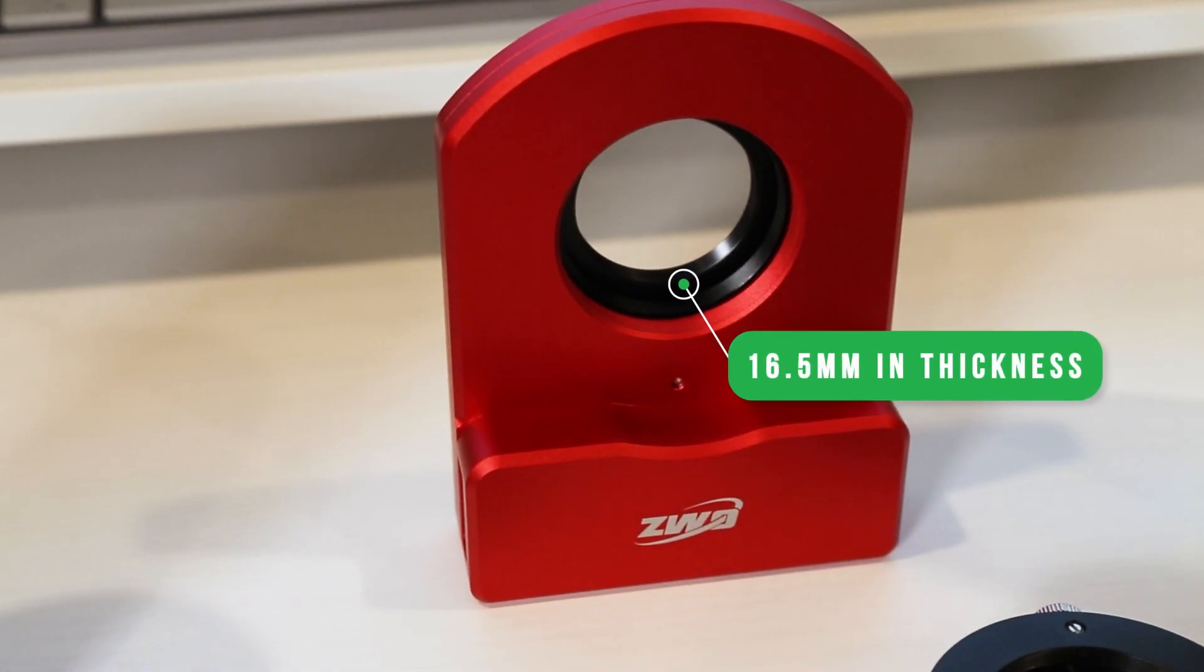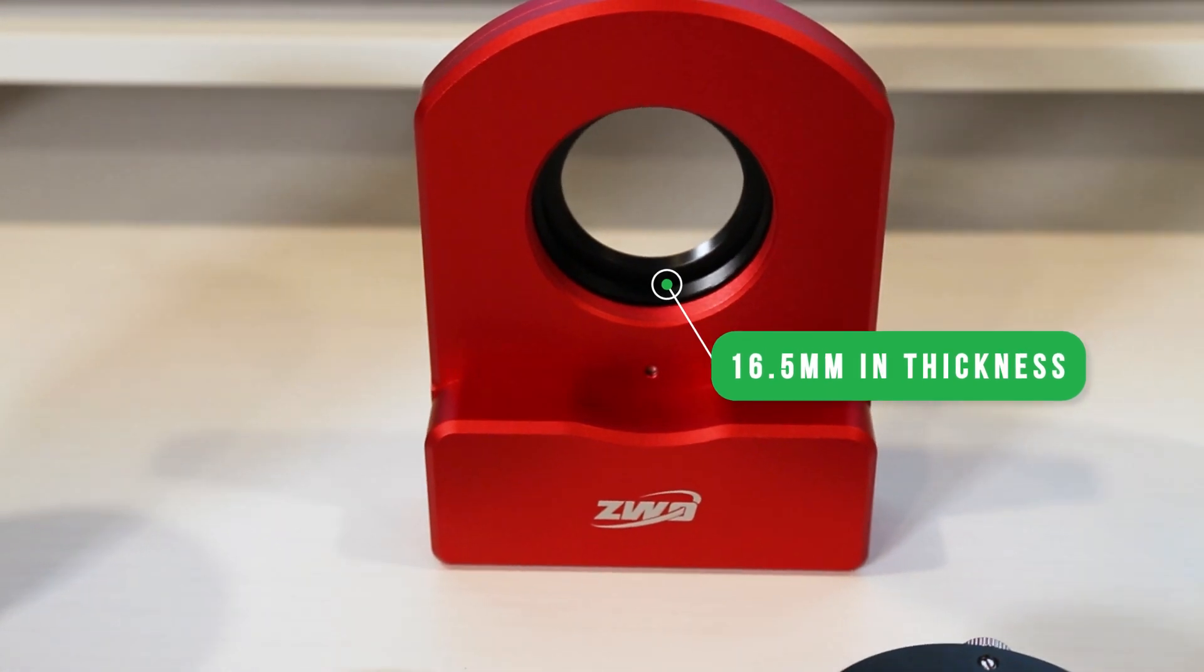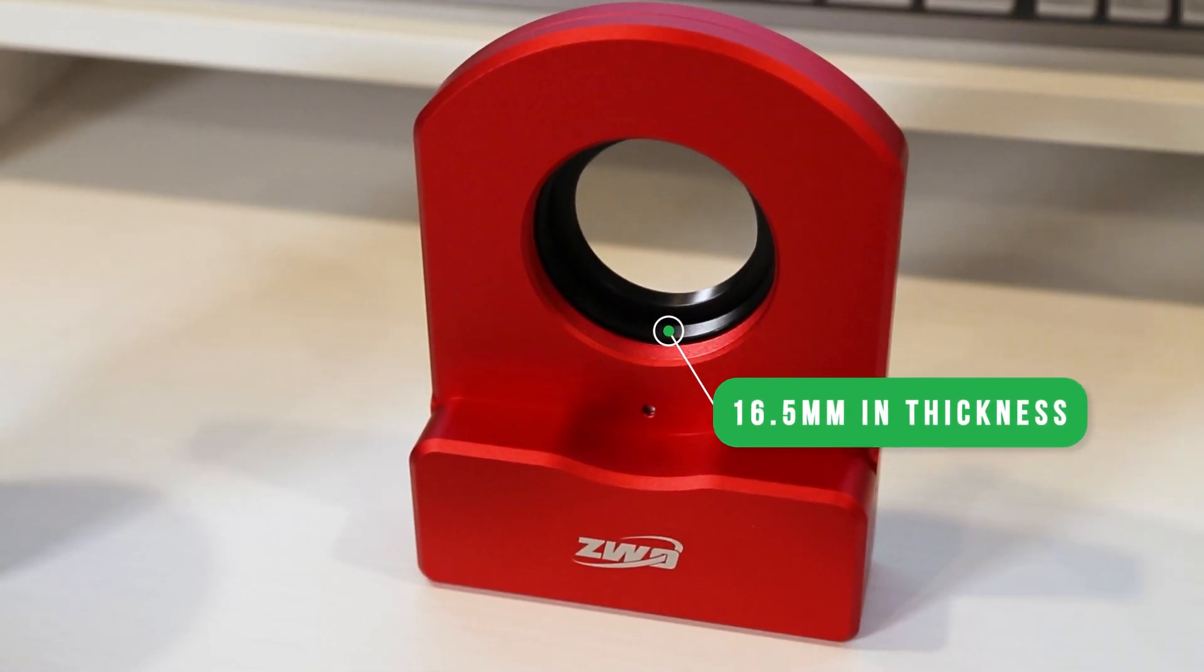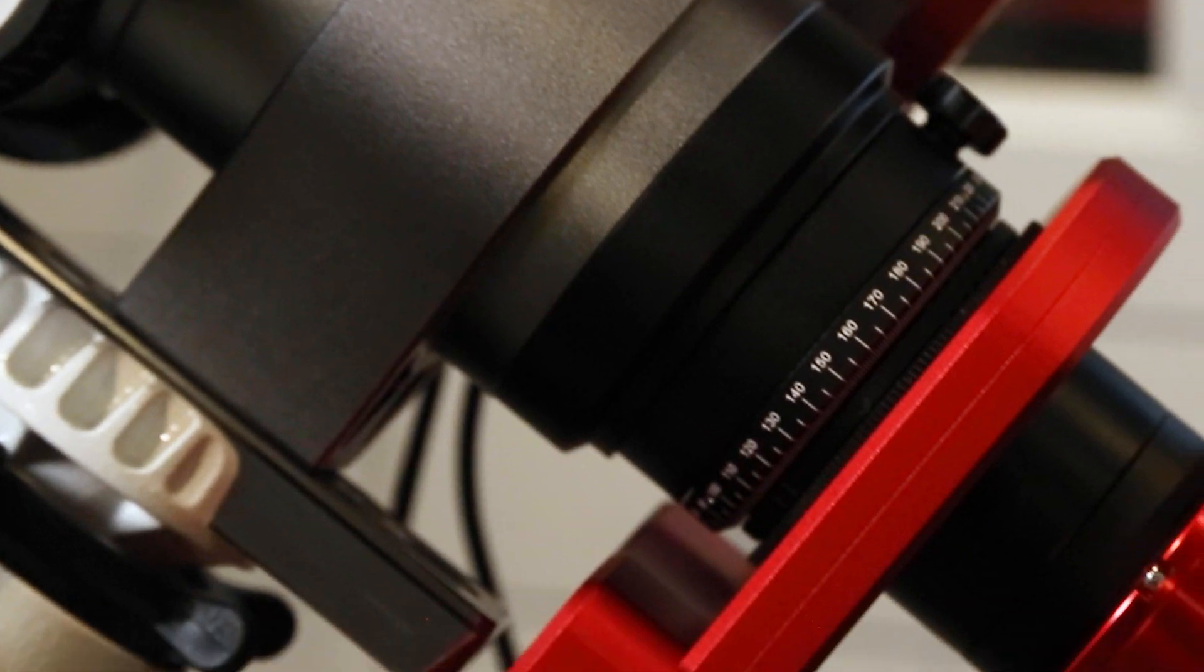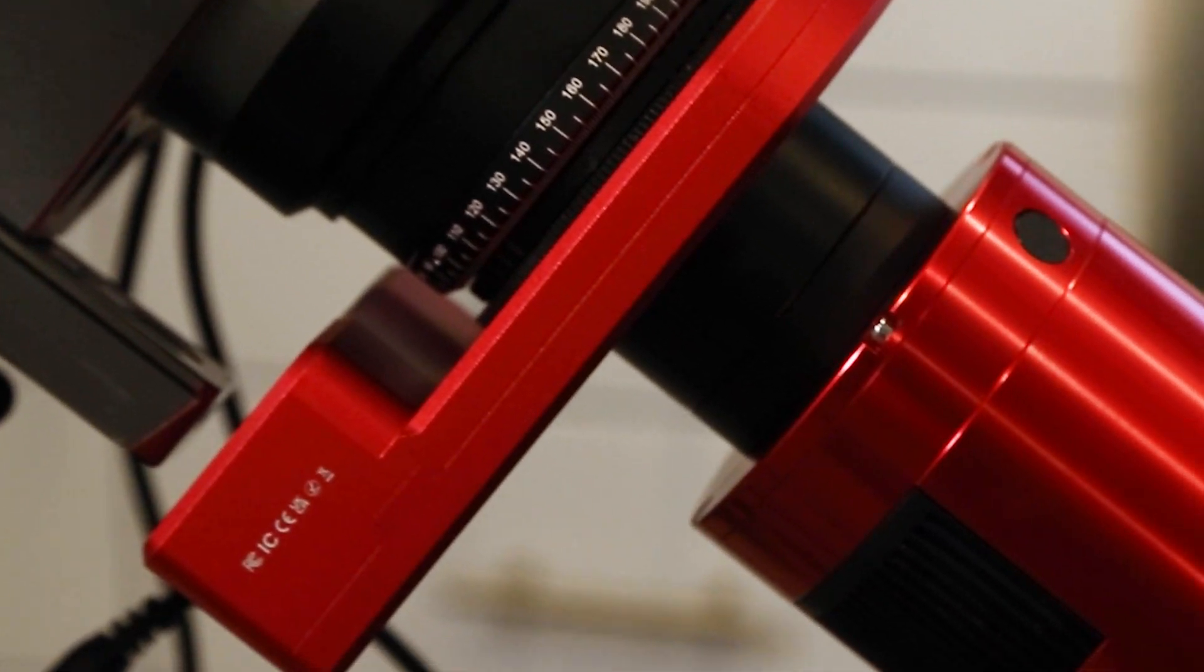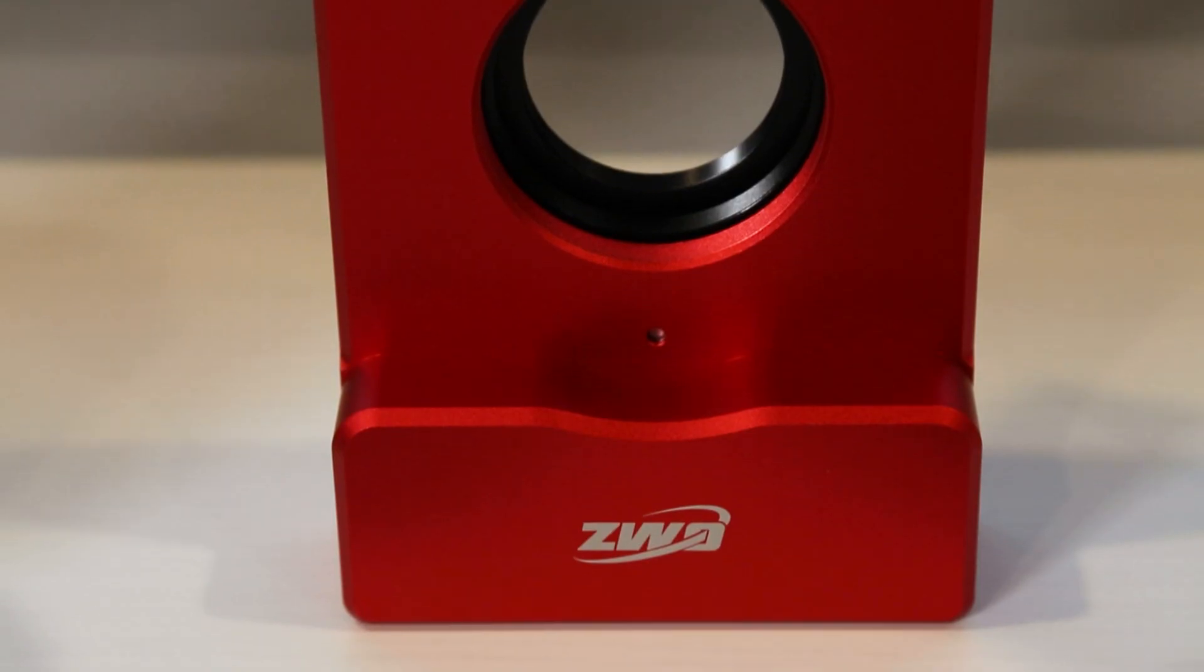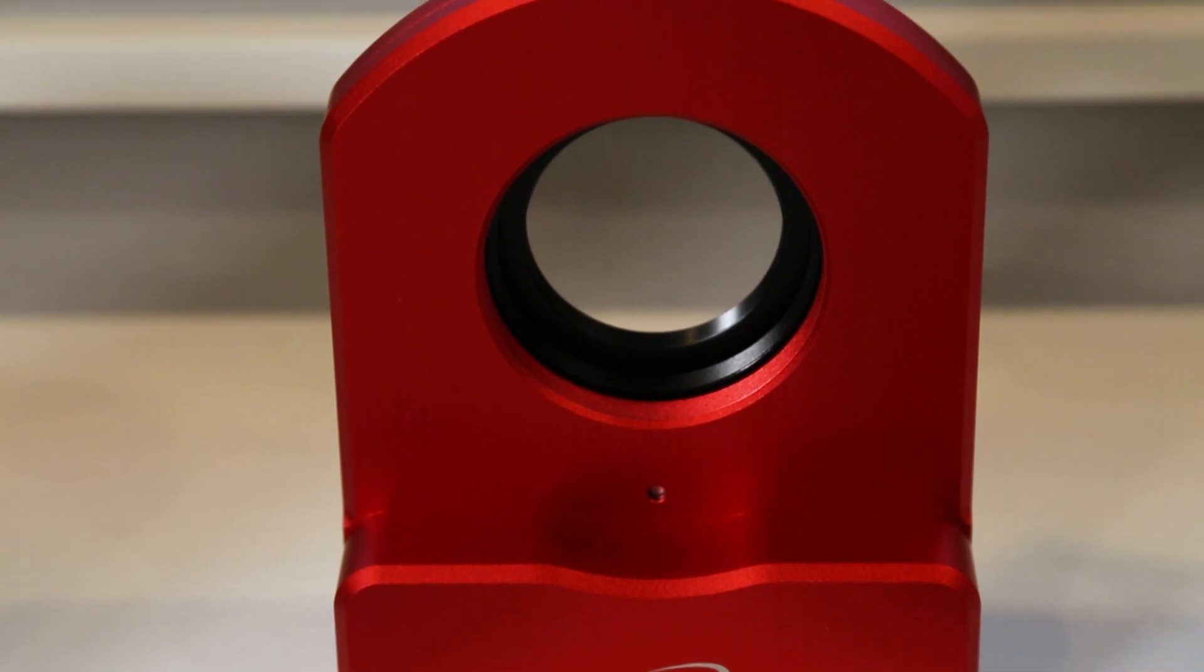It's designed at just 16.5 millimeters in thickness, which perfectly replaces the 16.5 millimeter spacer that ZWO sends with all of their cameras, making sure you achieve that perfect 55 millimeters back focus.